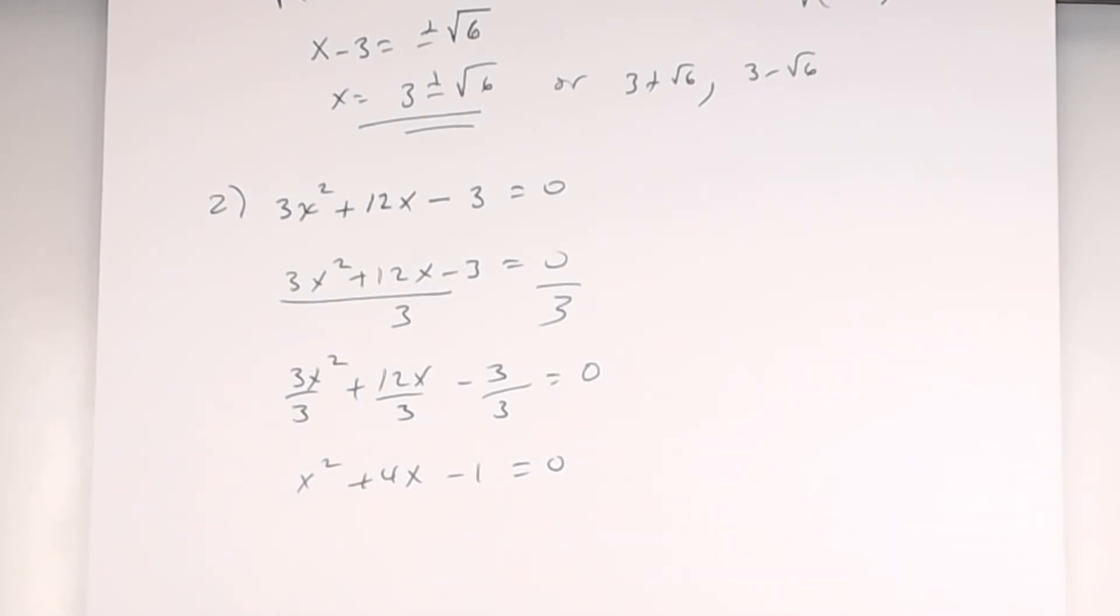So, you had to get x squared by itself. I'm sorry, the coefficient of x squared would be 1. So, it's not 1, you divide everything by that number. Now, the rest is what you've been doing. What's the next step?